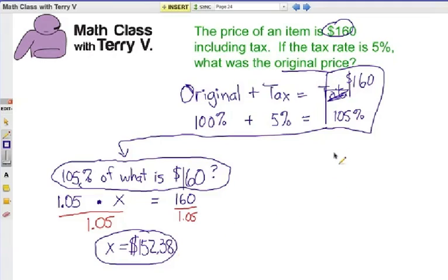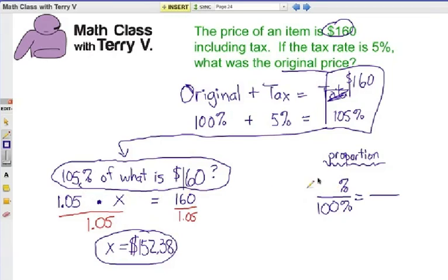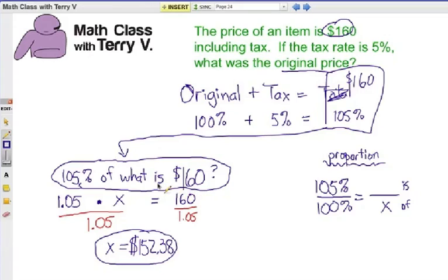Let's use the proportion method now. Sometimes writing a problem like this as a proportion is much easier. We always write 100% in the lower left. In the upper left we write the percent amount — in this case 105%. Notice that's larger than 100%, but remember, we're adding tax, so tax creates a more-than-100% amount. The ratio on the other side is 'is' over 'of.' 'Is' represents the part amount, and 'of' represents the original amount. We don't know the original amount, but $160 represents that 105% amount, so it goes on top. There's our proportion.